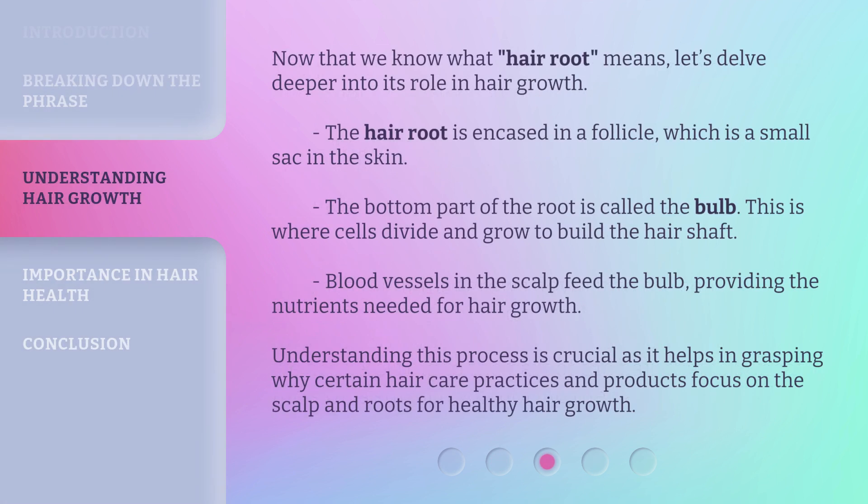Now that we know what 'hair root' means, let's delve deeper into its role in hair growth. The hair root is encased in a follicle, which is a small sack in the skin. The bottom part of the root is called the bulb. This is where cells divide and grow to build the hair shaft. Blood vessels in the scalp feed the bulb, providing the nutrients needed for hair growth. Understanding this process is crucial as it helps in grasping why certain hair care practices and products focus on the scalp and roots for healthy hair growth.